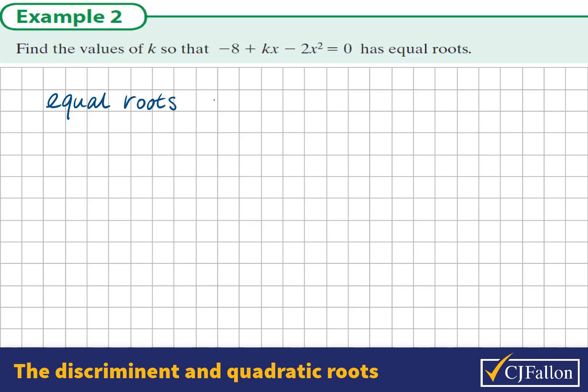Well, if the roots are equal, it means the discriminant, that is, the part underneath the square root form of the quadratic formula, b² - 4ac, would be equal to 0.